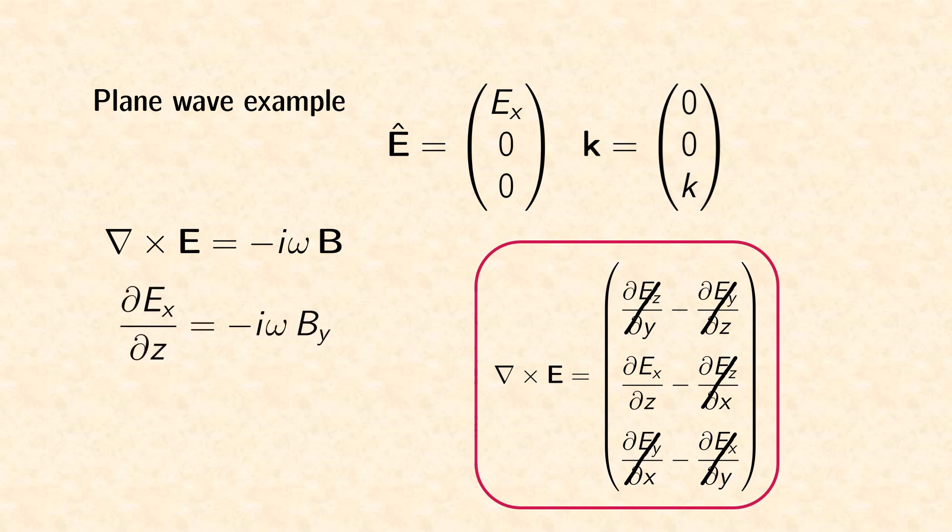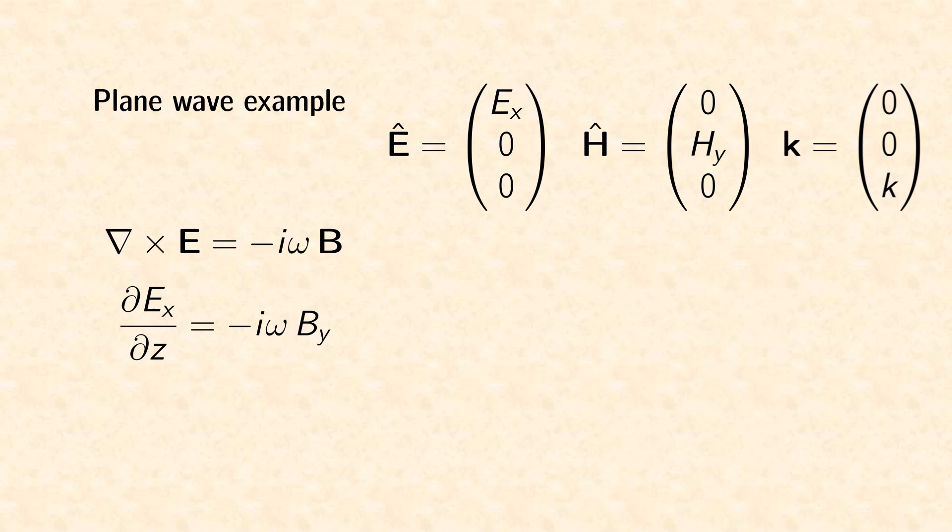For the time being, we conclude that the associated magnetic field is polarized in y-direction. Electric field, magnetic field and wave vector are always perpendicular to each other in an electromagnetic wave.